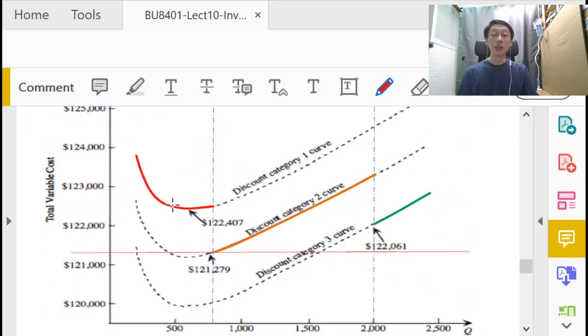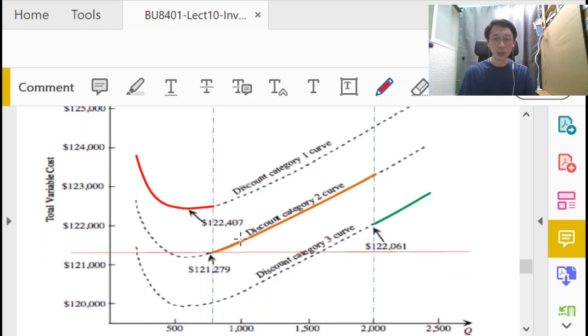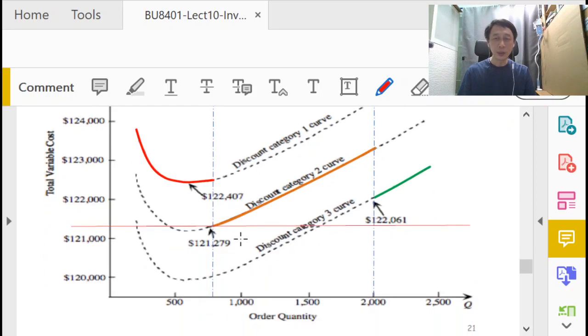As an inventory policy again, we talk about how much to order and when to order. The when to order part still is the same reorder point, D times L. We have then concluded this discussion of this model. As a quick summary, how many to order: that's based on the quantity as decided by the point that gives us the lowest global best total cost, examining the feasible regions of each cost curve indicated by or derived from the tiered discount tables.